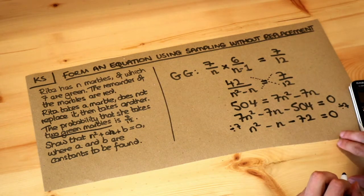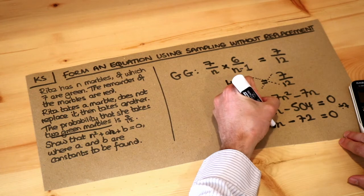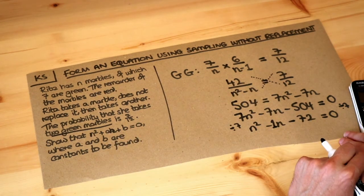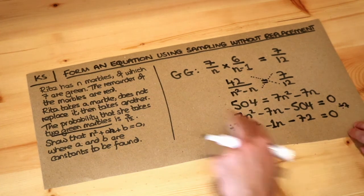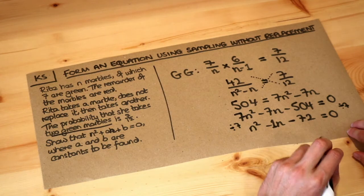And so we're done. We've managed to get an equation in this form. The a here turns out to be minus 1 because it's minus 1n, and the b is minus 72. Now, what we could do at this point, even though the question doesn't ask for it, is to work out how many marbles there are in total. And we can do that by solving this quadratic.